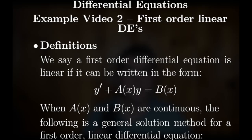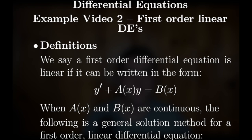We're going to begin by defining what we mean when we say that a first order differential equation is linear. We've already defined what it means for a differential equation to be of first order, so we're going to define what it means for a differential equation to be linear. We say a first order differential equation is linear if it can be written in the form y prime plus a of x times y is equal to b of x. If it can be written in that form, it is linear; if it cannot, it is not linear.